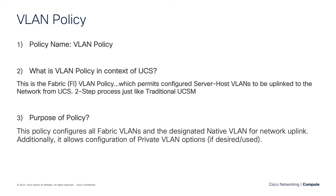Bear in mind, there's a difference here. In UCS Manager, the default VLAN of one was already native. In IMM, you have to actually choose which VLAN you want to be native, if any, to go upstream. You also have the ability to configure private VLAN options, but we're really going to talk about that in a separate video, so I won't be addressing private VLANs in this video.